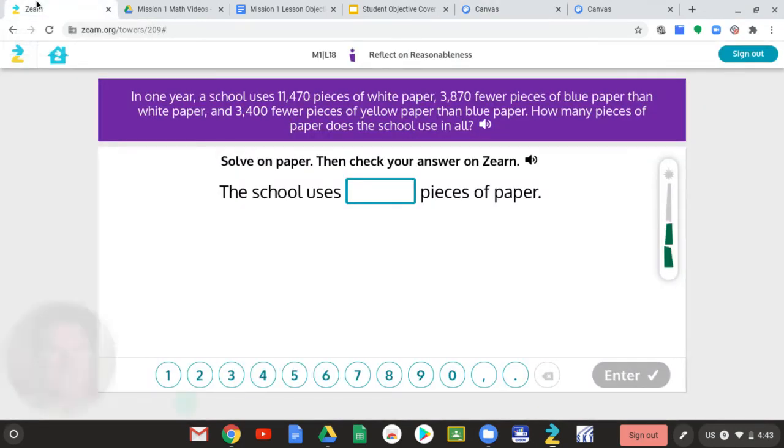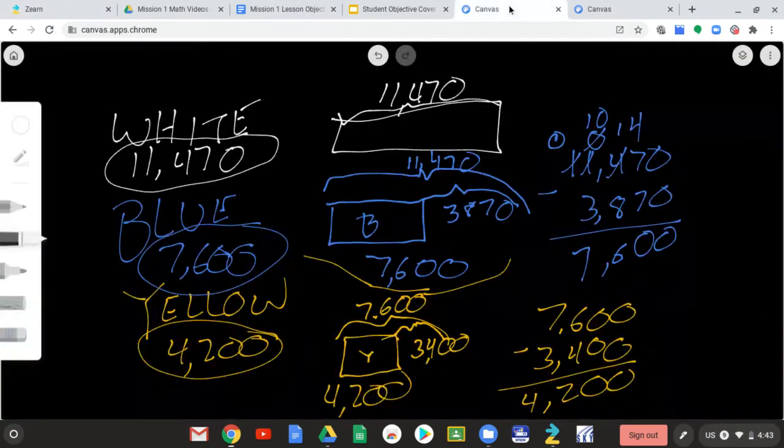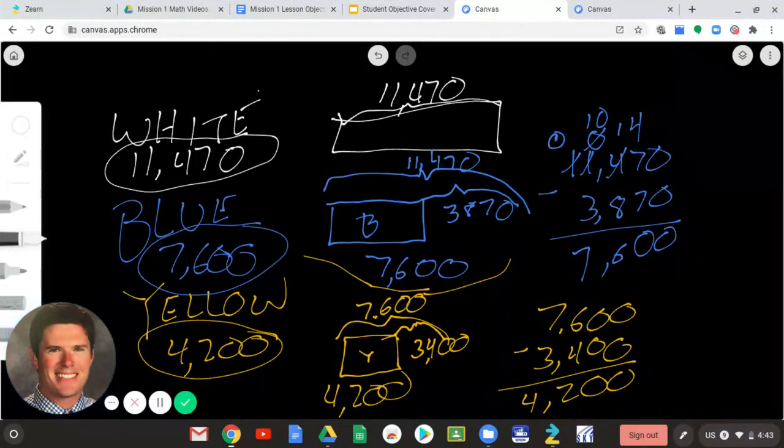Now, the question itself asks us, how many pieces of paper does the school use in all? So, when you have one of those in all problems, what does that mean? It means we need to add them all up. The white, the blue, and the yellow.